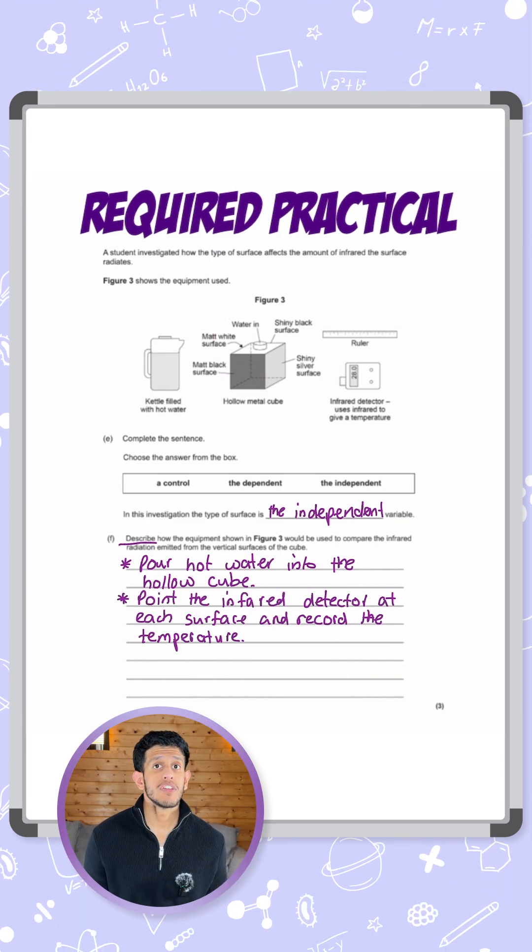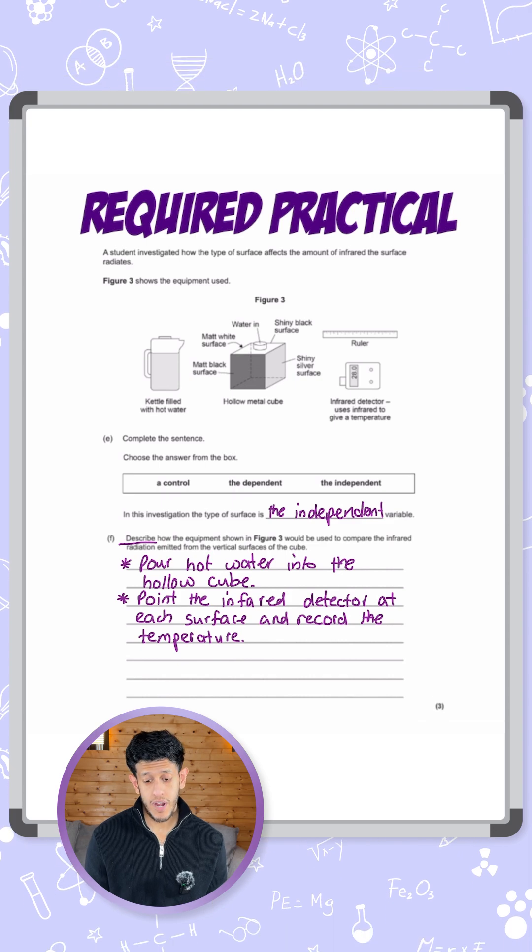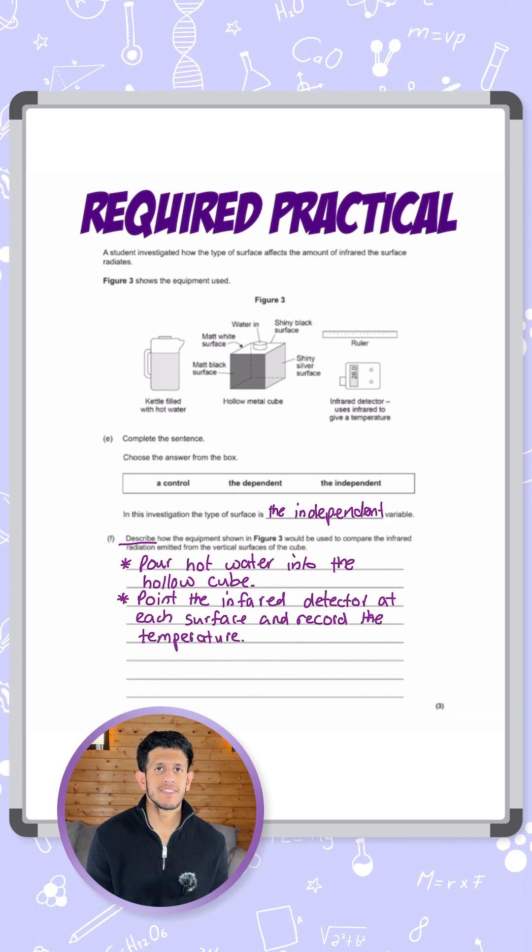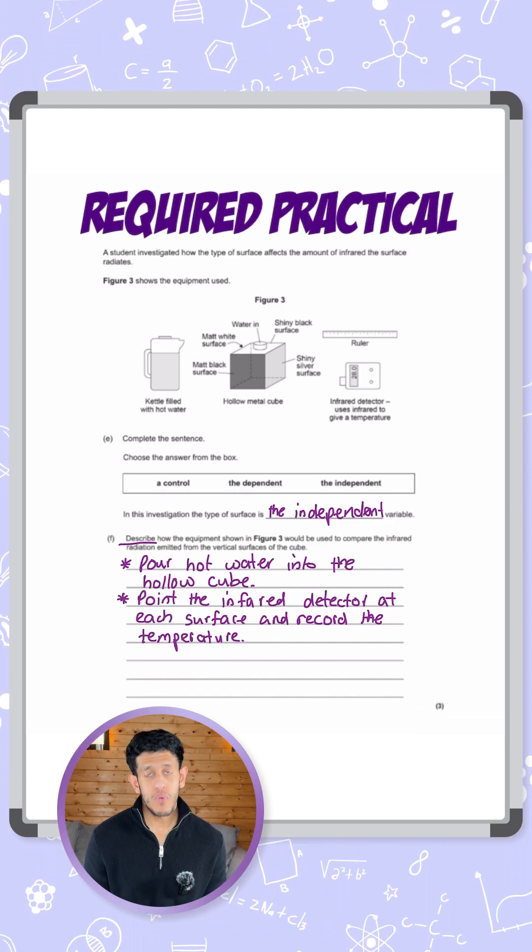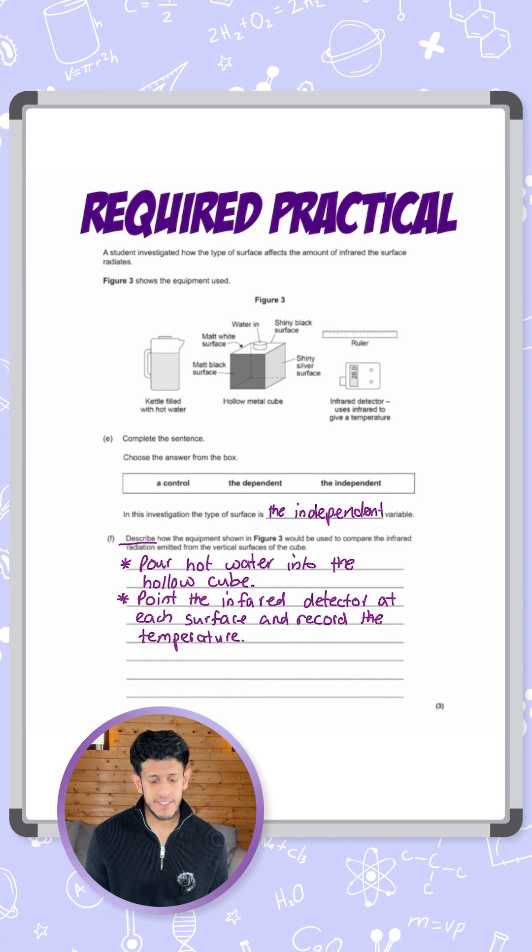Once it's heated up, we're then going to use the infrared detector that they've given in the diagram here to point it at each of the surfaces. And then from that, we will get a reading of the temperature on each surface. So that'll be the next step.